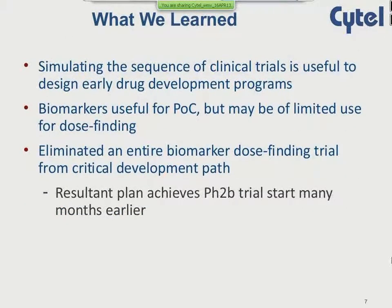What we learned from this exercise was that simulating a sequence of trials is useful in designing an early development program. In this case, biomarkers were useful for demonstration of proof-of-concept but were only of limited use for dose finding. That finding allowed us to eliminate an entire biomarker dose-finding trial from the critical path of development, resulting in an earlier start to the Phase 2B trial.